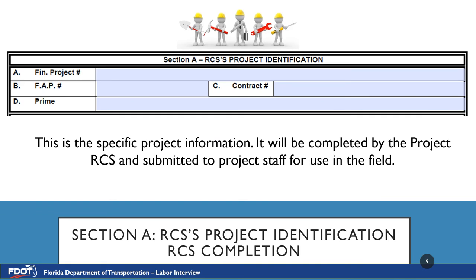Do not send labor interviews to the employee. Section A is the RCS's project identification — this is the specific project information. This section will be filled out by the RCS on the template for submittal to the project staff for use in the field.